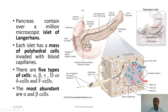The pancreas also contains the islets of Langerhans, which form the endocrine part. Each islet is a mass of polyhedral cells with a rich blood supply, since this portion gives its secretion into the blood rather than any duct. There are five types of cells in the islets: alpha cells, beta cells, delta cells, gamma cells, and F cells. The most abundant are the alpha cells and beta cells.